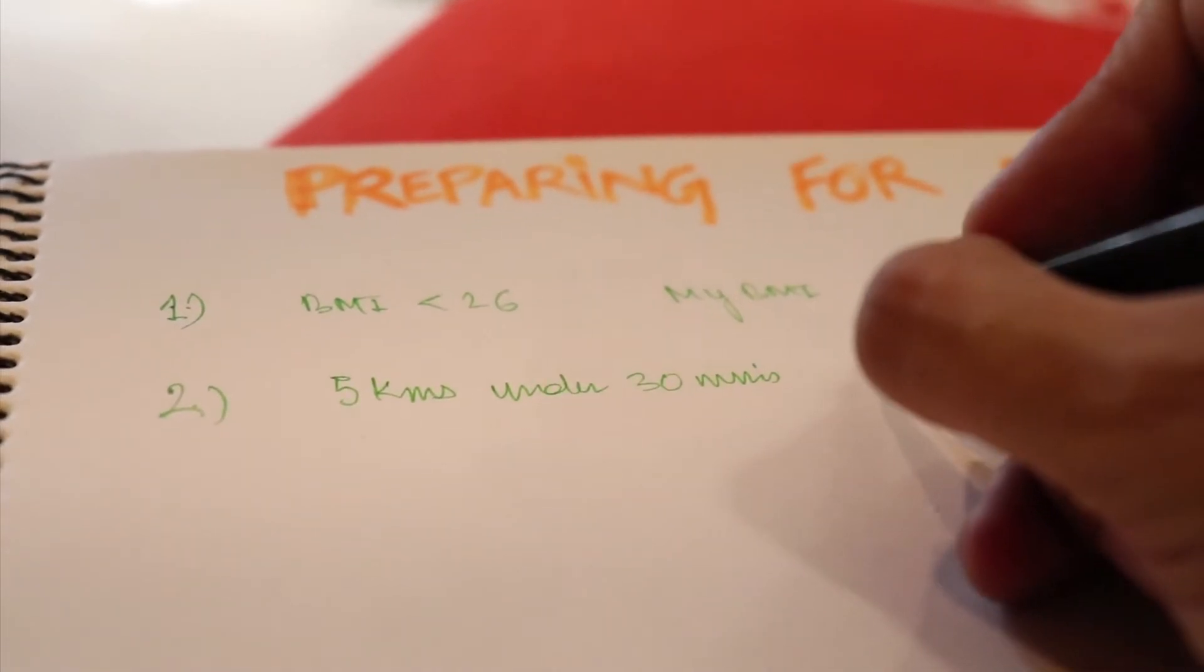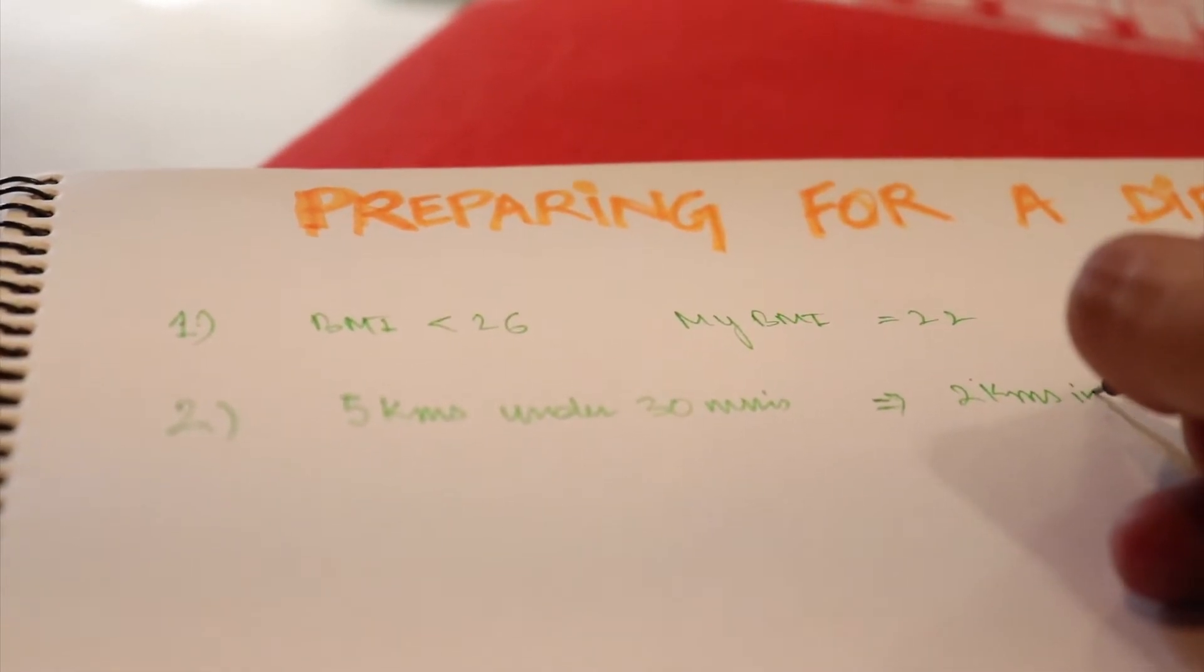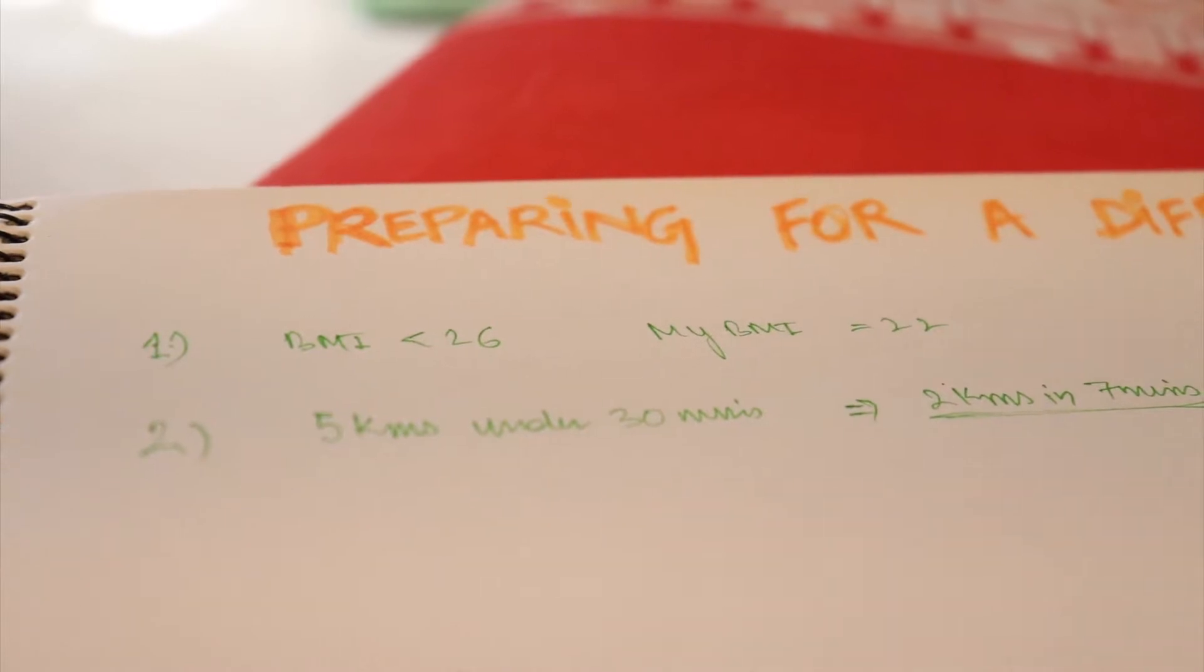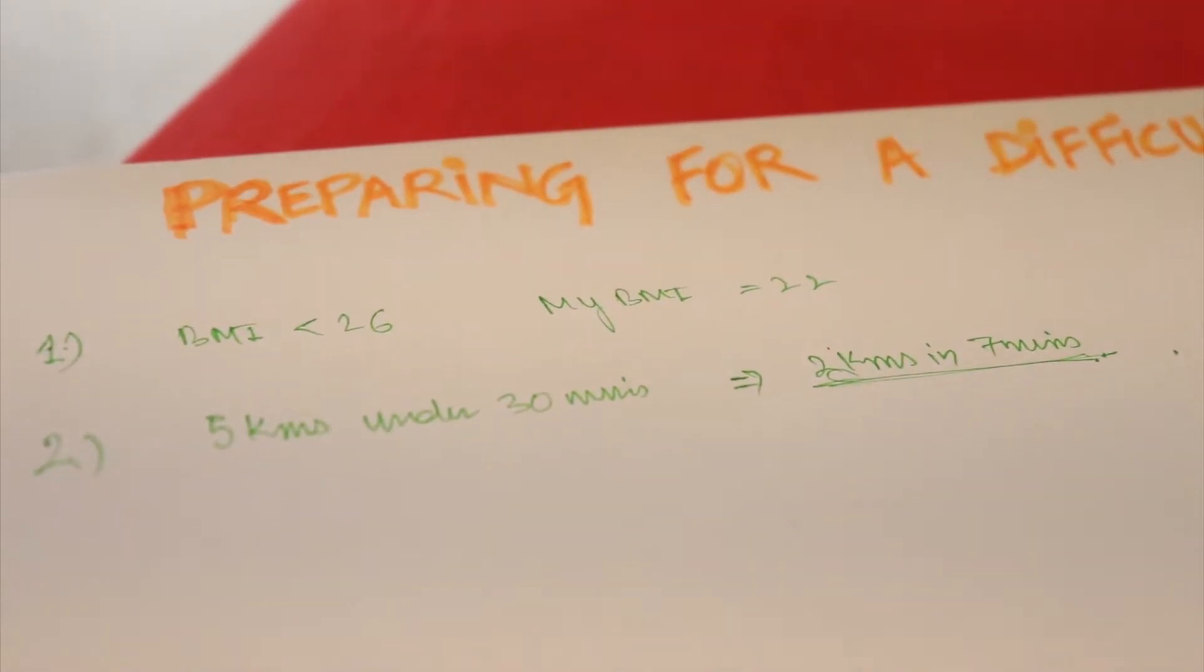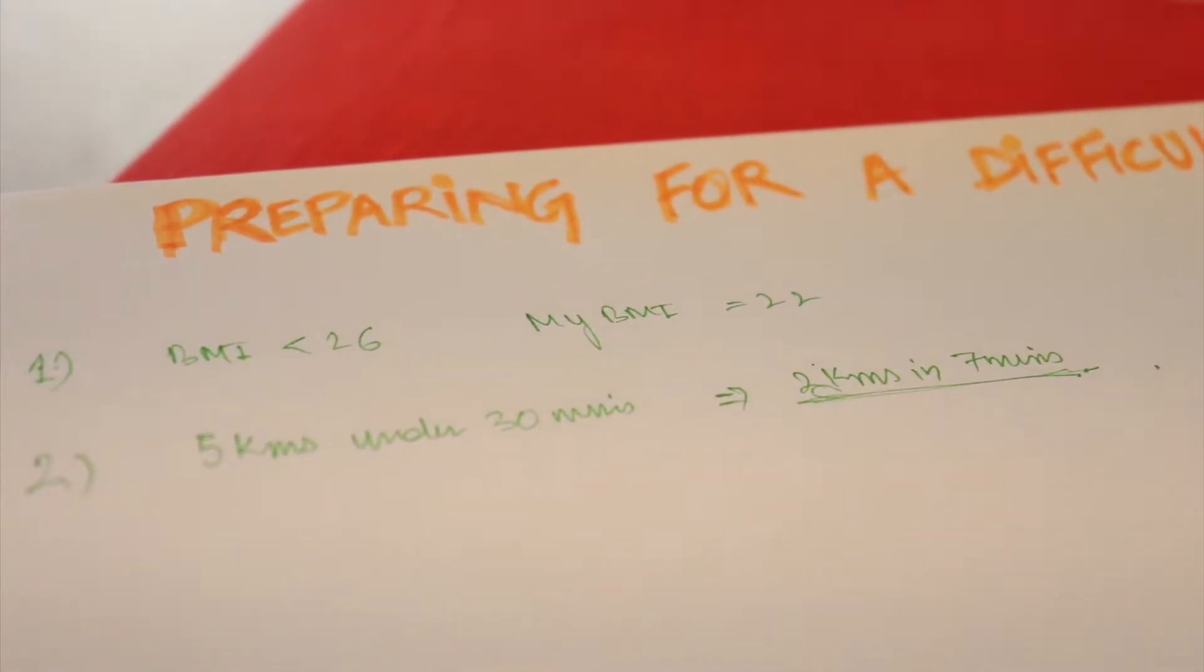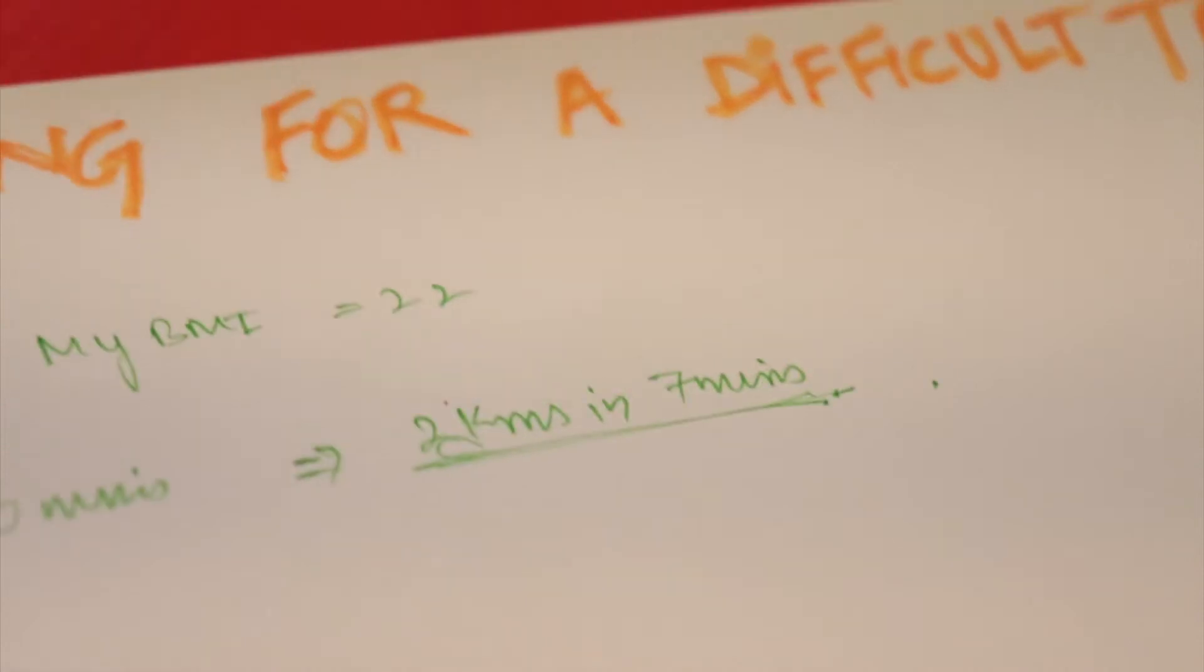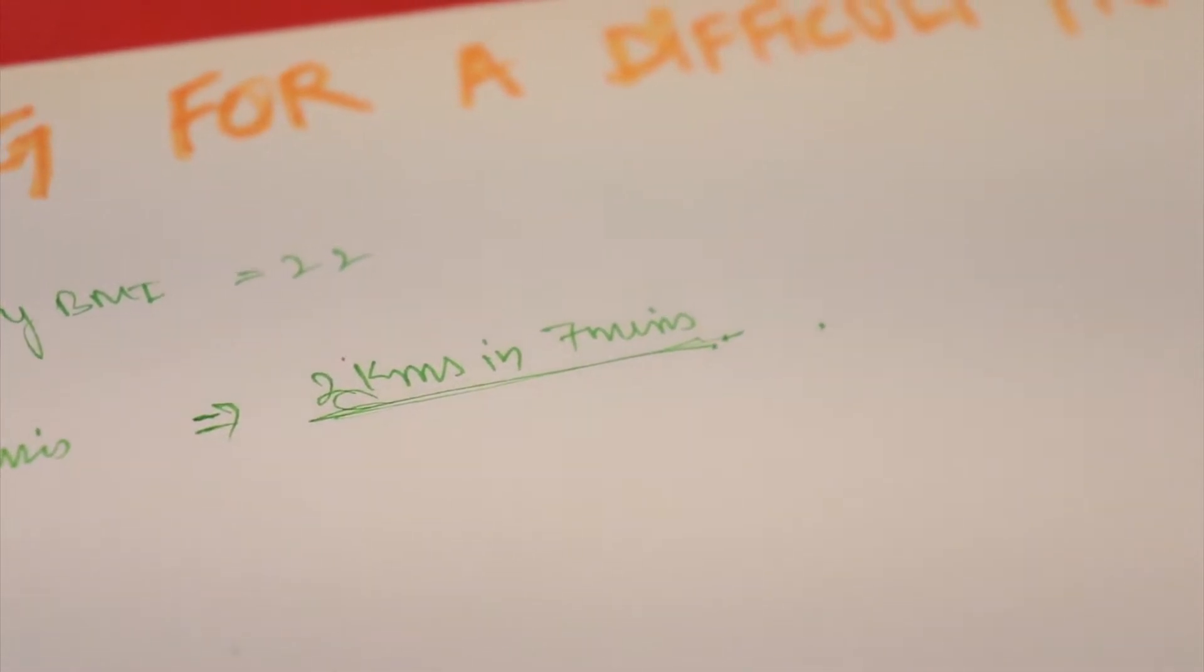For me personally, I can cover two kilometers in seven minutes, which I recorded just today. I recorded once five kilometers in 20-25 minutes, but that was three-four months ago, and I'm way fitter now. So 3.5 minutes is what I take to cover one kilometer now.